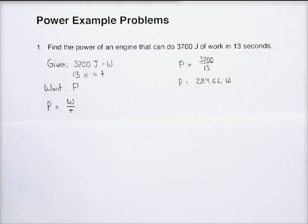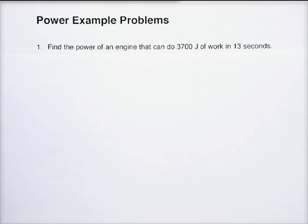All right, let's work some power example problems and see exactly how these go. One, find the power of an engine that can do 3,700 joules of work in 13 seconds. Now, in order to solve these, we're going to solve them just like we solve anything else where we're using a formula or equation to do this.